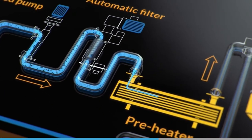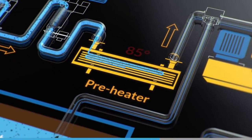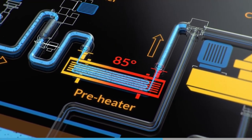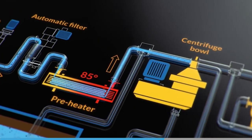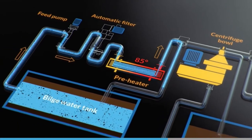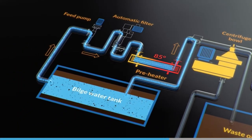The bilge water then goes through a preheater, where it is heated to about 85 degrees Celsius, and via the feed valve to the separator. During the start-up or ejection program of the centrifuge, the flow is directed back to the bilge water tank.